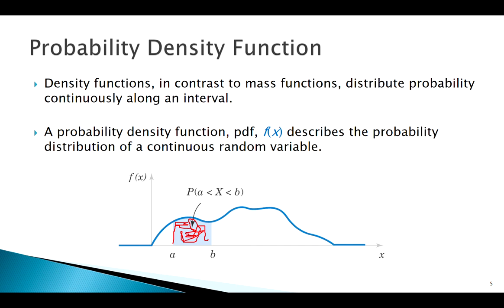If our curve looks like this and I wanted the probability of being less than a, that would be the area to the left. The probability of being greater than a would be the area to the right.